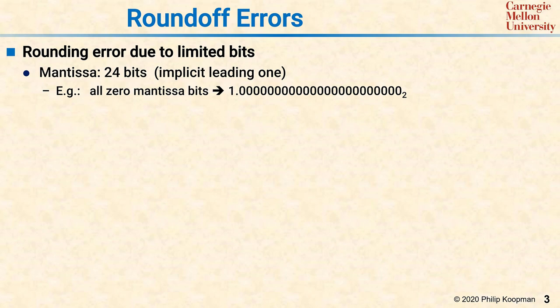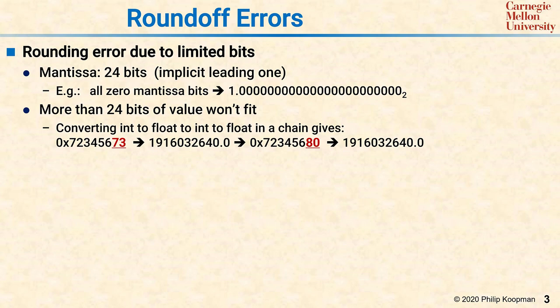Perhaps the most famous problem with floating-point numbers is round-off errors. Rounding errors occur because you only have 24 bits to work with in the mantissa, including the leading one. That means if you have all 0 mantissa bits, it's 1 dot 23 zeros base 2. If you have more than 24 bits of value, they won't fit. While this sounds obvious, the implications can be a little subtle.